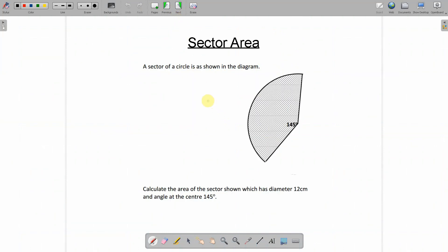Now the second question here is for sector area. Now it looks pretty much the same as the arc length. However when you read the question carefully it asks us to calculate the area of the sector. So it gives us the sector with an angle and it tells us that the diameter is 12 centimeters and we want to calculate the area of the sector.